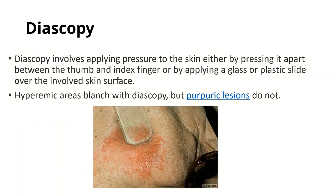Whenever a lesion is labeled as purpura, it is confirmed by the diascopy test. In the diascopy test, we take a glass slide and try to blanch the discolored area. If the lesion blanches, it is not a purpura, because classically purpuric lesions do not blanch. Once confirmed, we begin investigation for the cause of purpura.